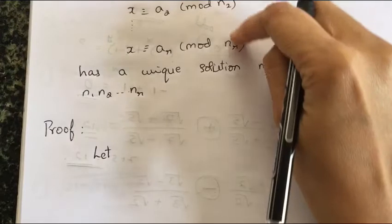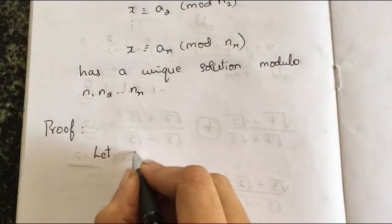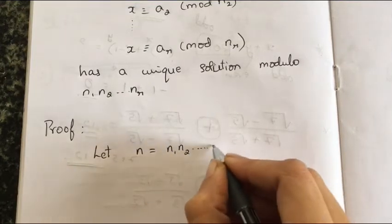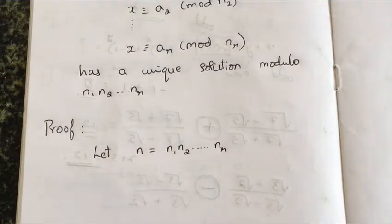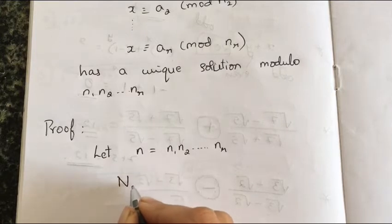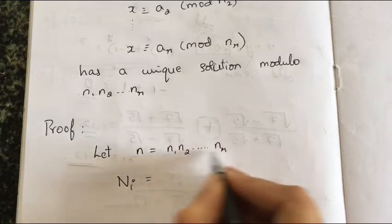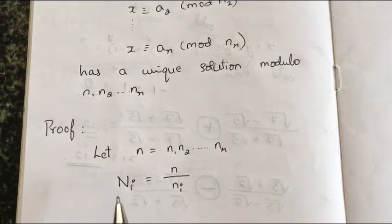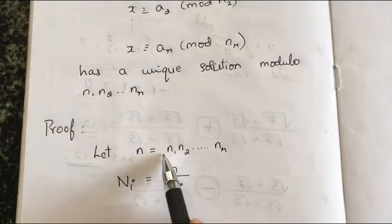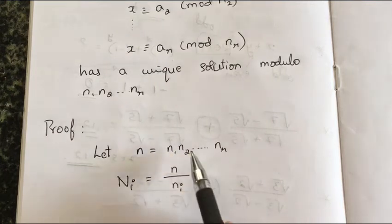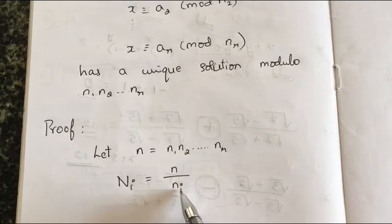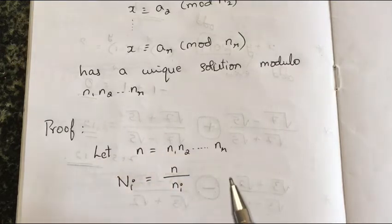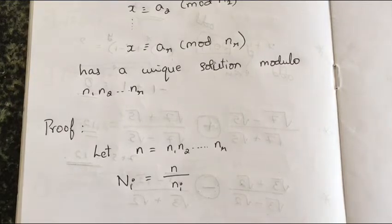Let us take a product of all these positive integers first. I'll denote it as small n, which is n1·n2·n3·...·nr. And I'll define one more number, capital N_i, which is the product of all the small n_i's divided by a particular n_i. So capital N_i is the product of all n_i's with the particular n_i omitted.